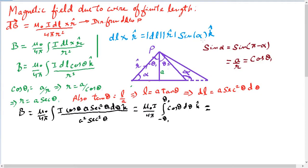Welcome. In this lecture we are going to derive the magnetic field due to a wire of finite length, for which we will use the Biot-Savart law, which says that the magnetic field due to a small element is given by dB is equal to mu naught i dL cross r-hat over 4 pi r squared.